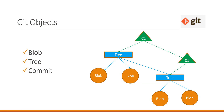In this video we have seen three types of git objects: blob object, tree object, and commit object. I hope this video helps. If you like the video, please like, share, and subscribe. Thanks a lot for watching.